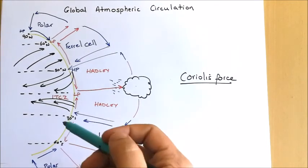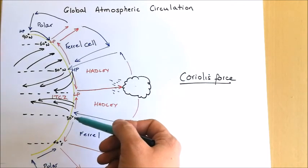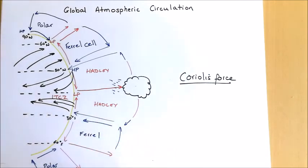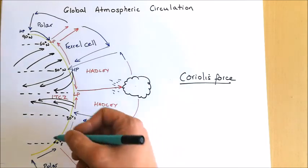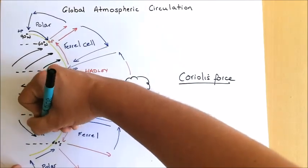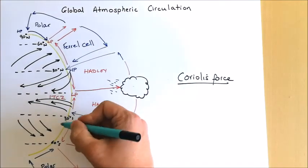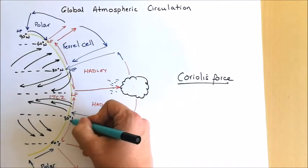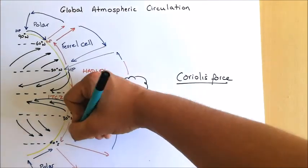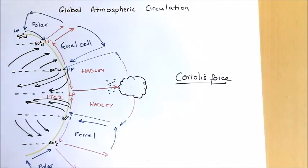The same applies in the southern hemisphere. The wind in the Ferrel cell travelling along the surface is deflected to the left. So that air is deflected in the same relative direction, meaning that again we get our south-westerly winds.